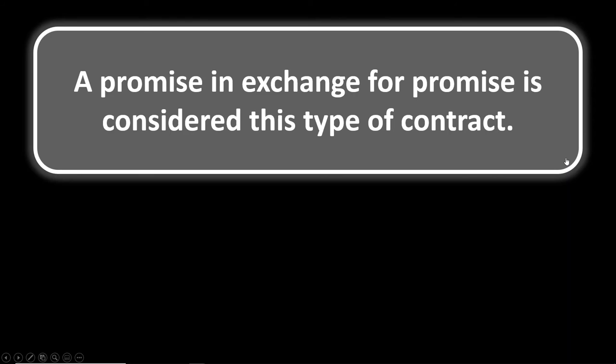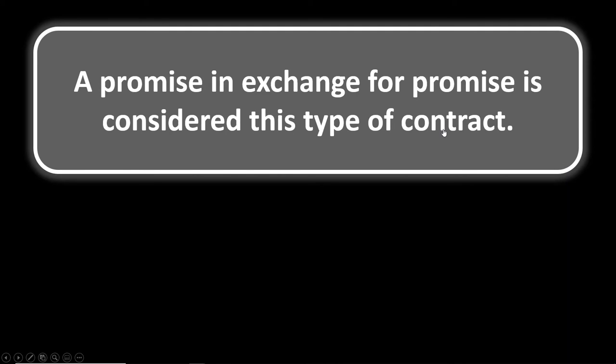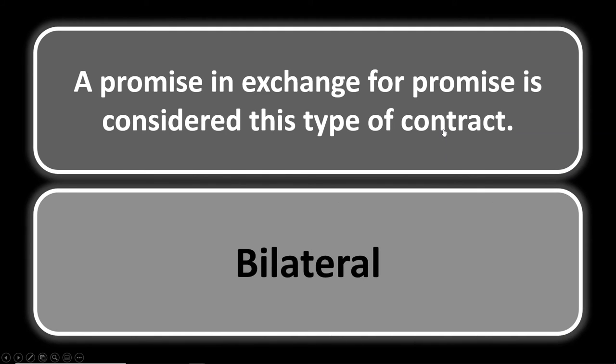Contracts number two: a promise in exchange for a promise is considered what type of contract? A unilateral contract is a promise in exchange for an act, whereas a bilateral contract is a promise in exchange for a promise. So the answer is a bilateral contract.